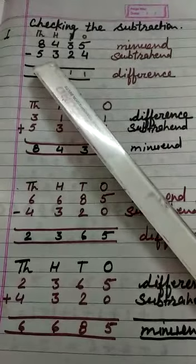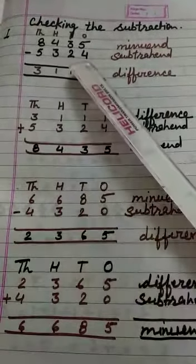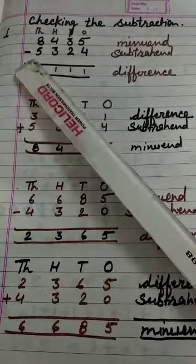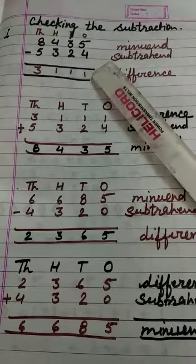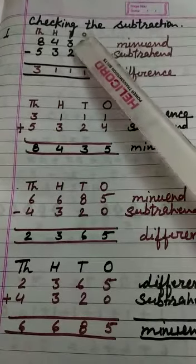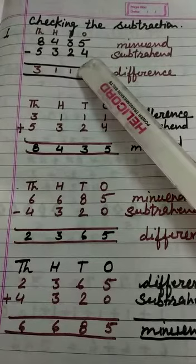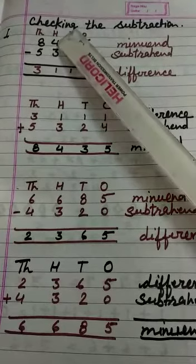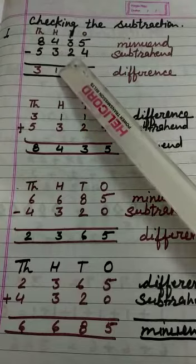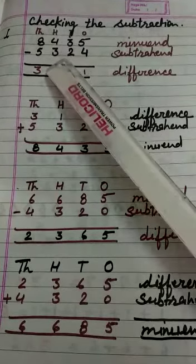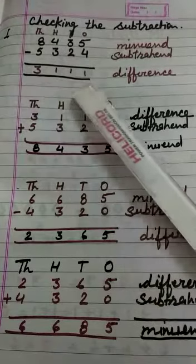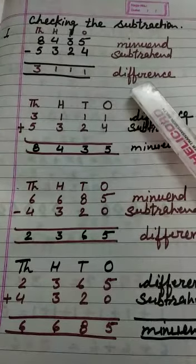Now, let's start to solve it right to left. 5 minus 4, we get 1. 3 minus 2, then we get 1. 4 minus 3, again 1. 8 minus 5, then 3. This is the answer or difference.